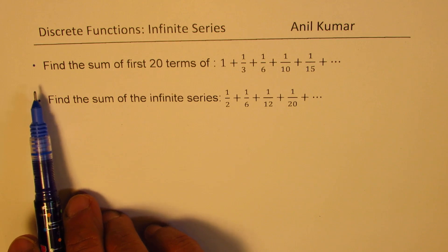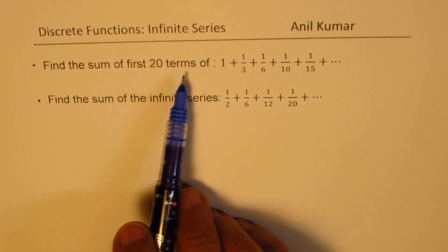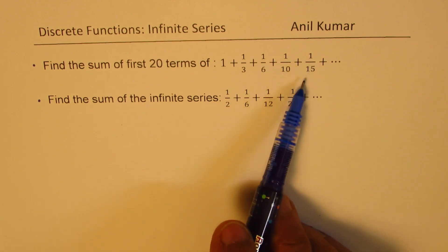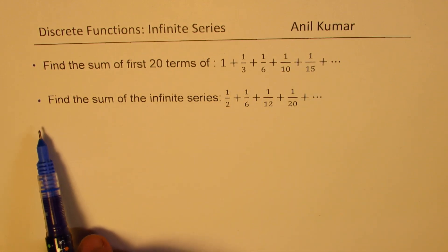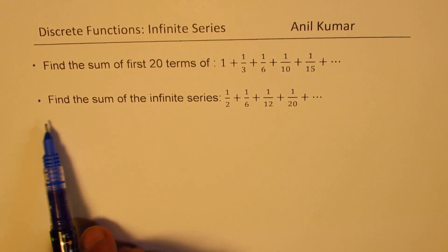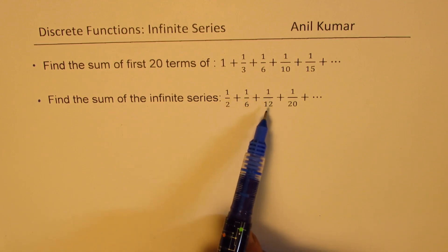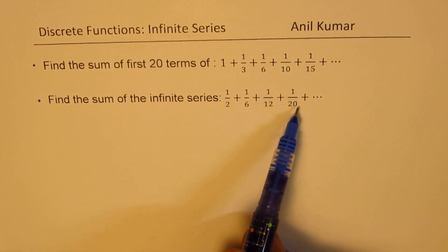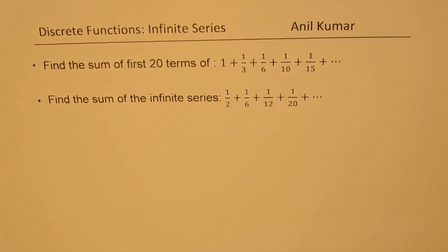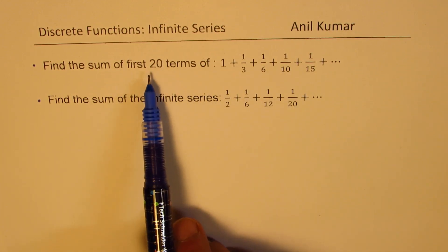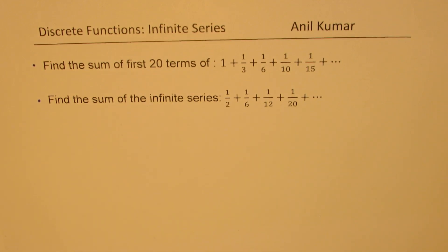Question number one is: find the sum of the first 20 terms of 1 + 1/3 + 1/6 + 1/10 + 1/15 and so on. And question number two is: find the sum of the infinite series 1/2 + 1/6 + 1/12 + 1/20 and so on. So one is a finite series — we need to find the sum for 20 terms. The other one is an infinite series, to give you an idea of how to work with such series.